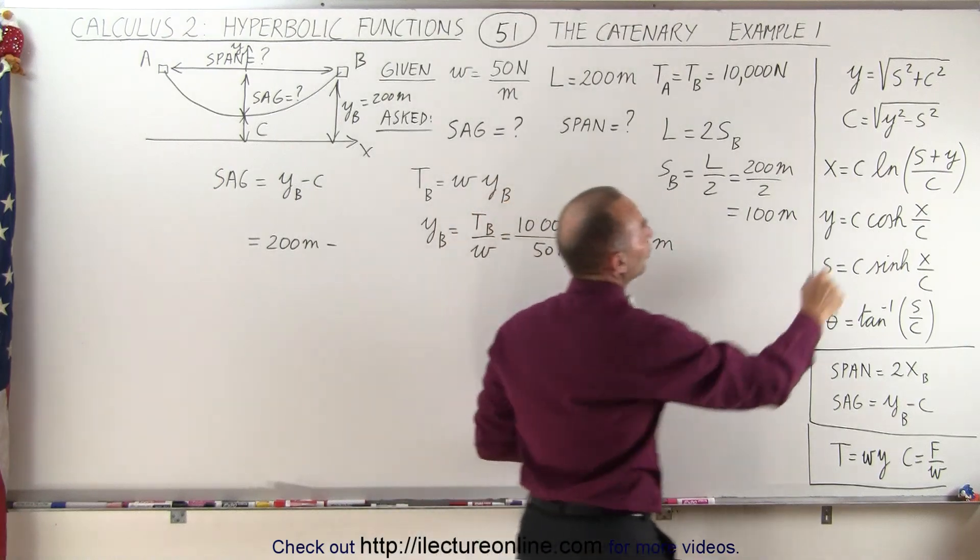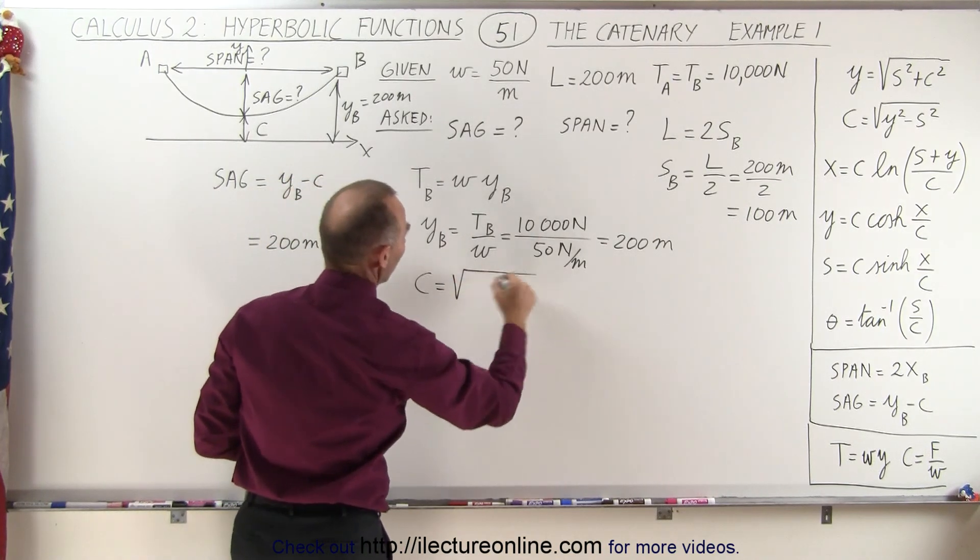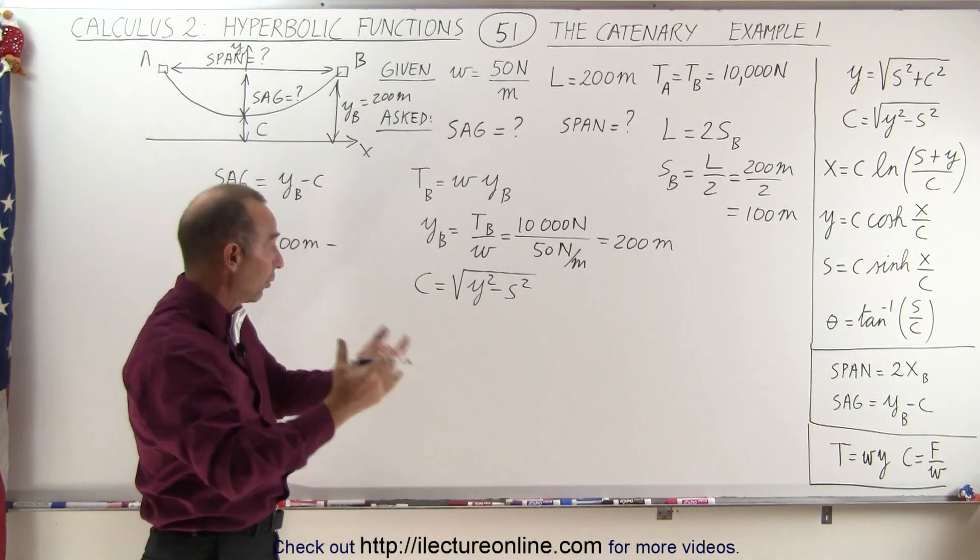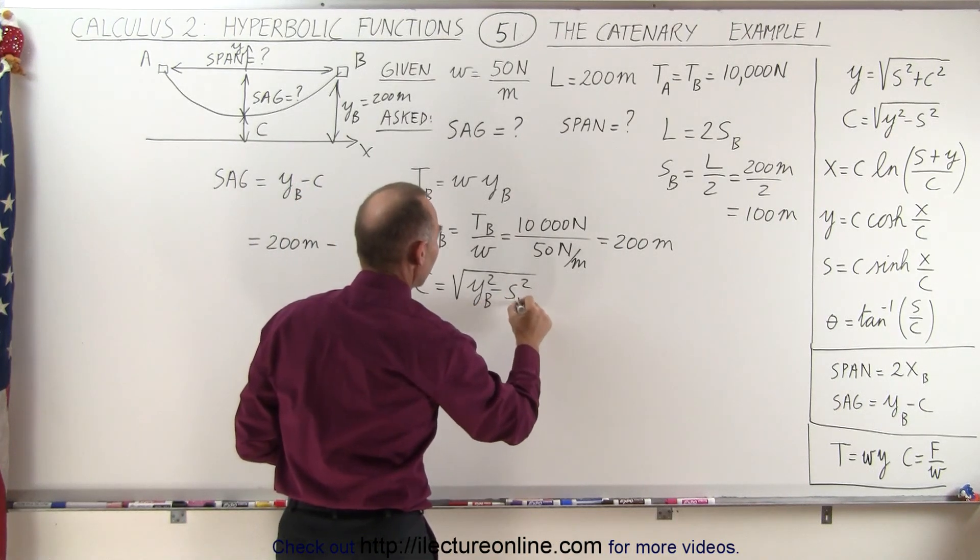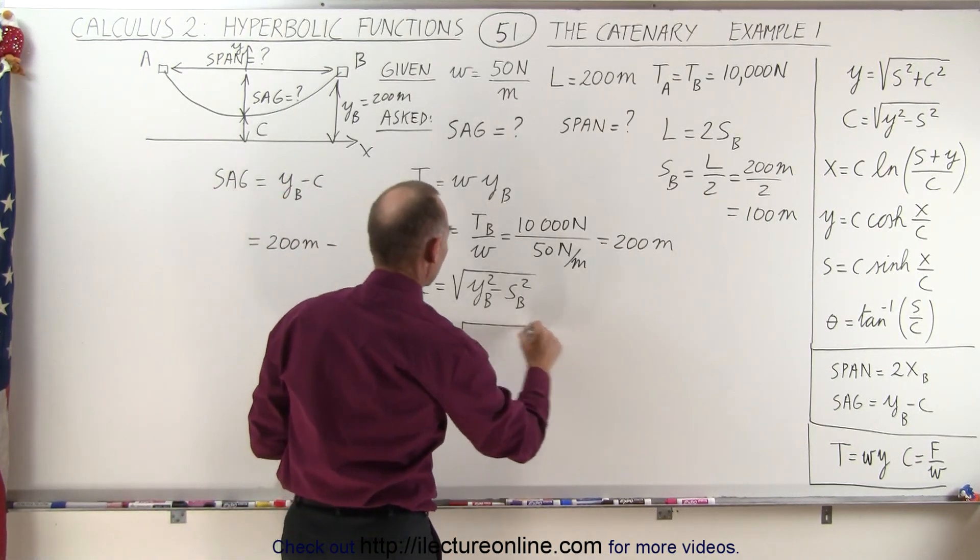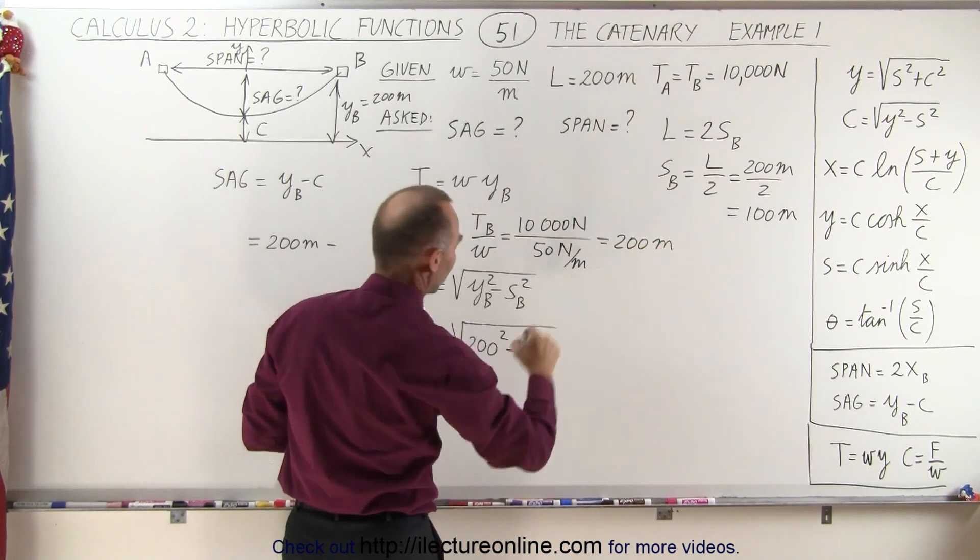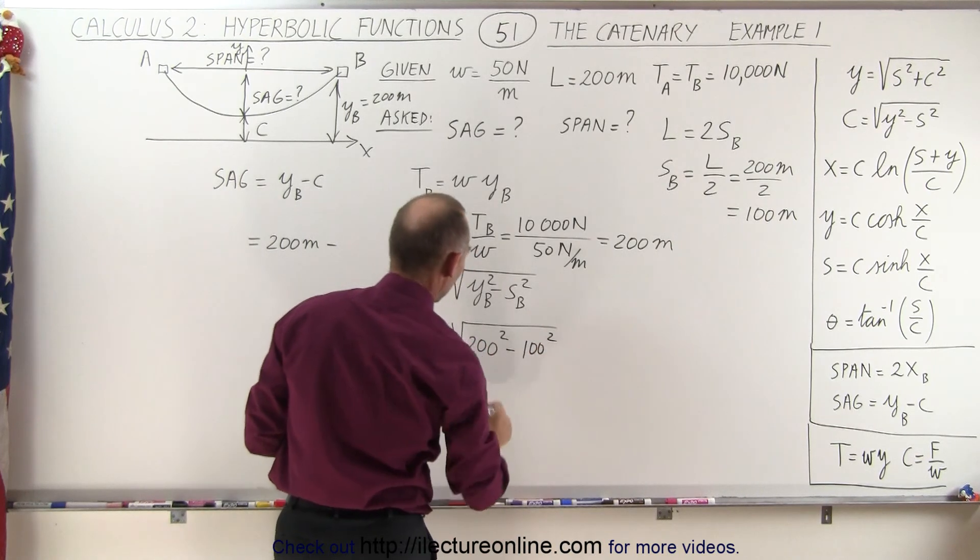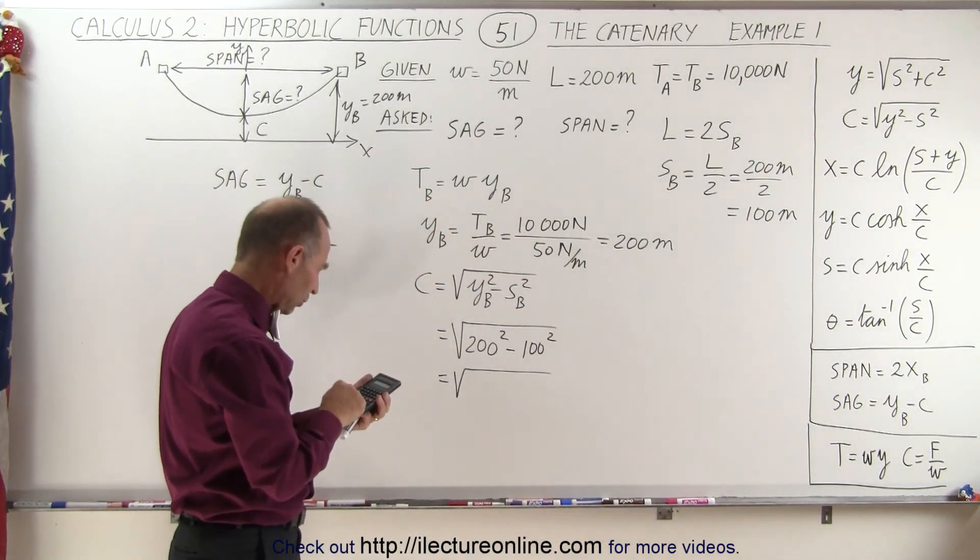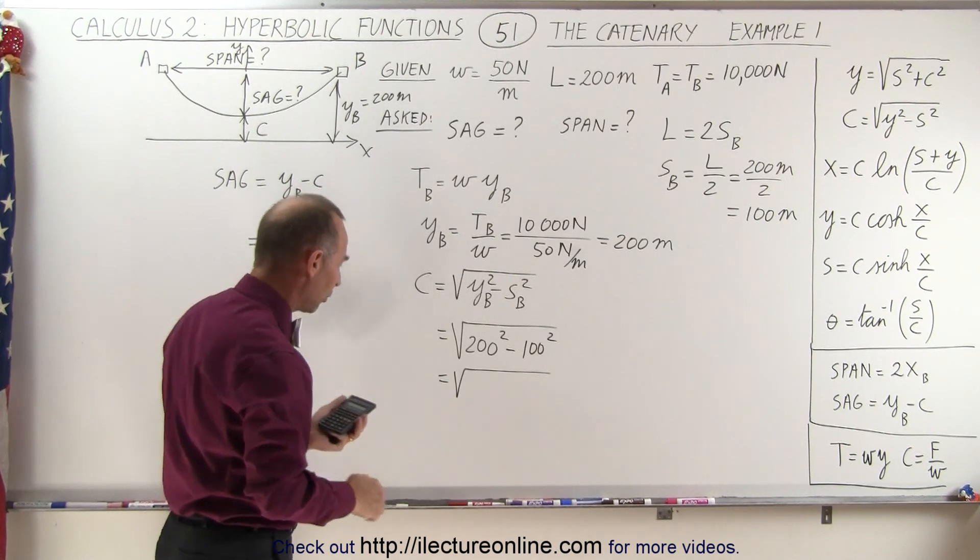So we do know S, we do know Y, so that means we can say that C is equal to the square root of Y squared minus S squared, and of course we need to take it at the same point. We don't care what point we take it at, but since we know the information at point B, we'll go ahead and use those values at point B. So this becomes equal to the square root of Y sub B, which is 200 meters squared, minus S sub B, and S sub B we said was 100 meters squared. So this becomes equal to the square root of, well let's see, we need a calculator for that. So we have 200 squared minus 100 squared, take the square root of that, we get 173.2 meters.